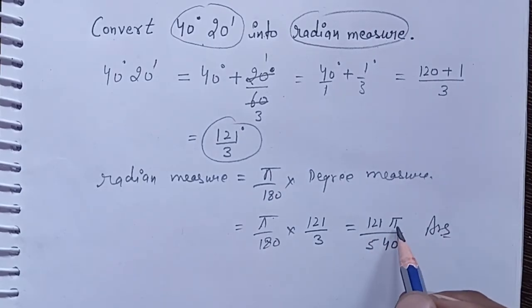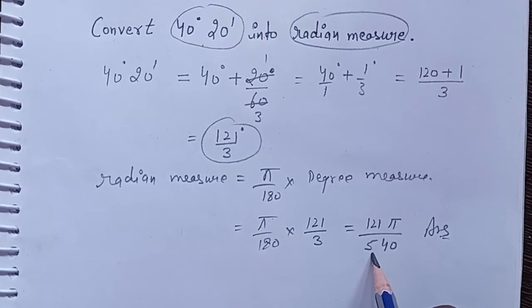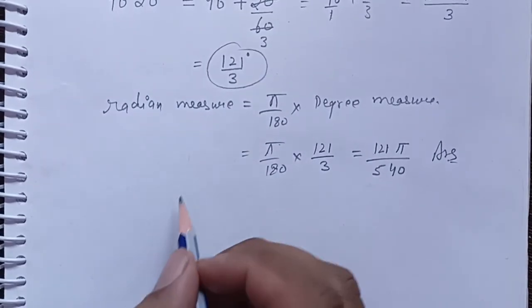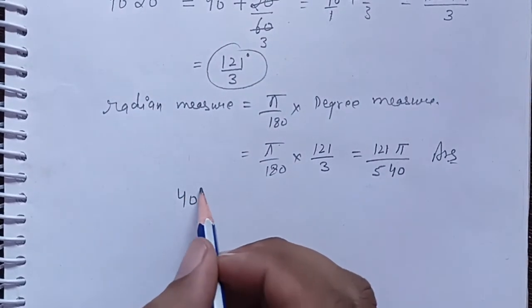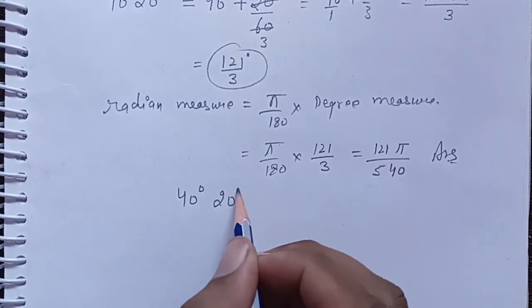We can write 40 degree 20 minute equals 121π divided by 540 radians. This is our answer.